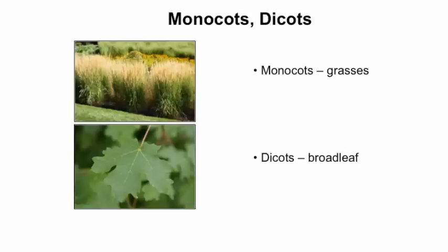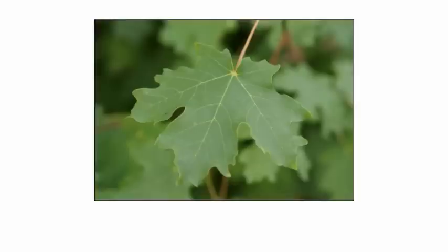Additionally, monocots do not produce wood, have parallel veins in their leaves, and most have their growing points near the soil level. Dicot plants may be woody or herbaceous, have growing points located all over the plant, and have net-like leaf veins, such as the maple leaf pictured here.